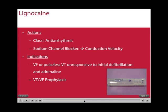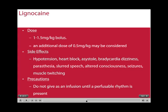Lignocaine is a class 1 antiarrhythmic which blocks sodium channels, decreasing conduction velocity. Its indications are for VF or pulseless VT unresponsive to initial defibrillation and adrenaline, and its use has been largely relegated by the better antiarrhythmic amiodarone. However, it still has a place as not everybody can tolerate amiodarone. The dose to be given is 1 to 1.5 mg/kg bolus, with an additional dose of 0.5 mg/kg being considered if it is effective. Side effects of lignocaine include hypertension, heart block, asystole, bradycardia, dizziness, paresthesia, slurred speech, altered consciousness, seizures, and muscle twitching. It should not be given as an infusion until a perfusable rhythm is present.